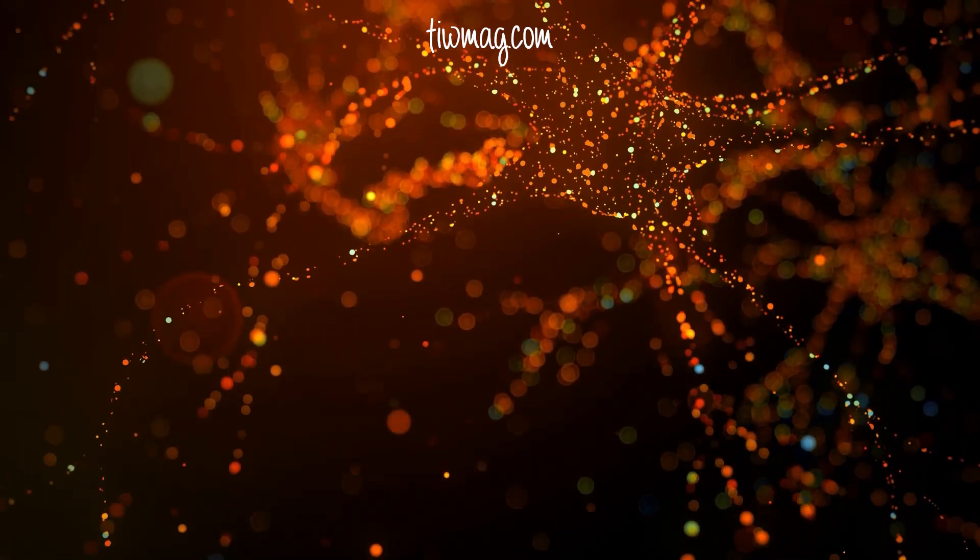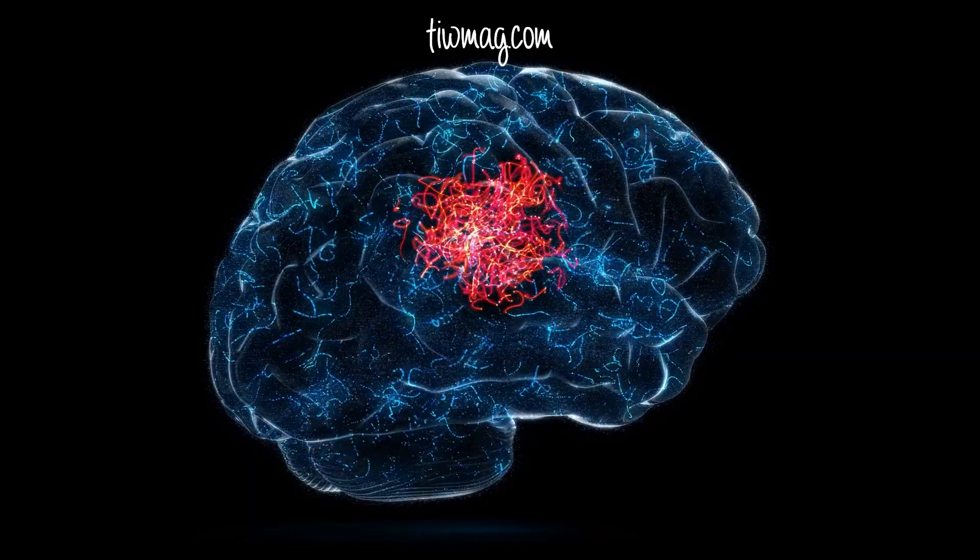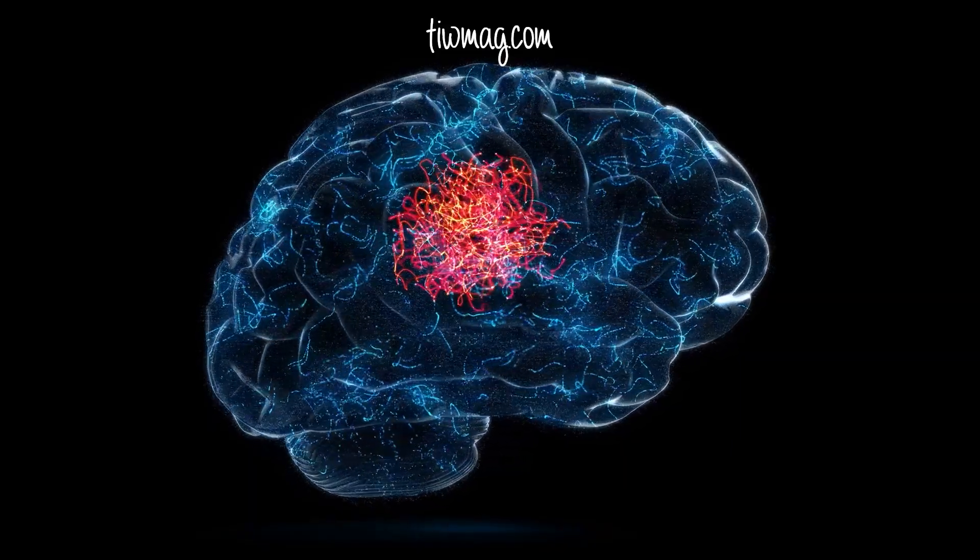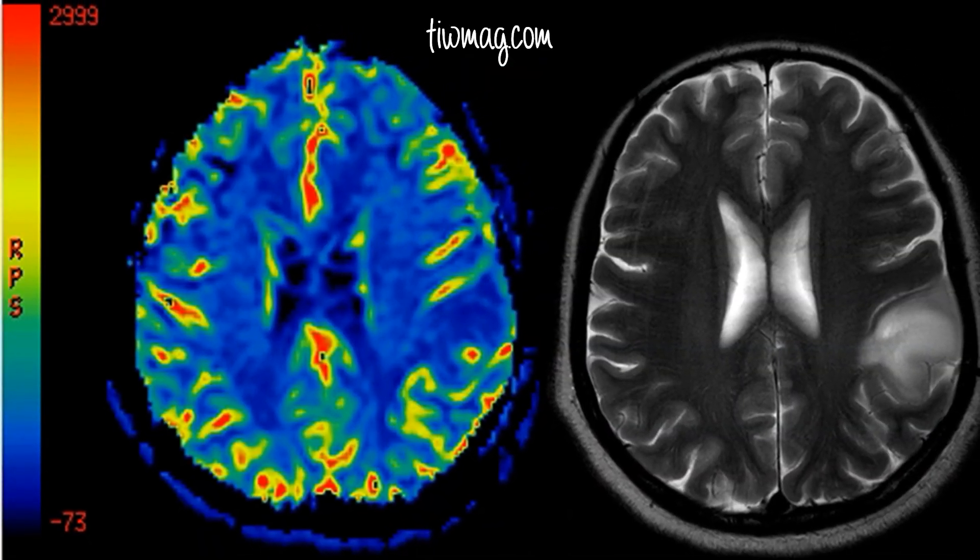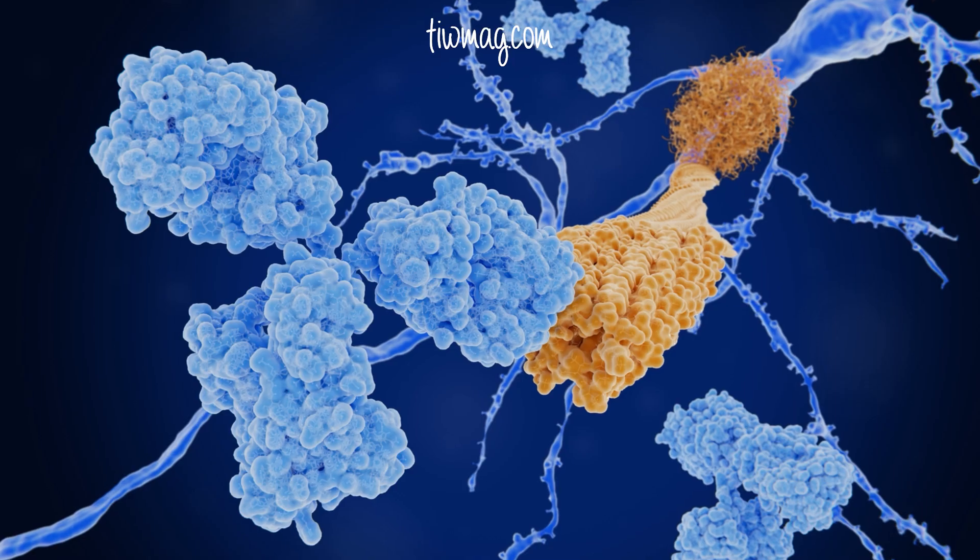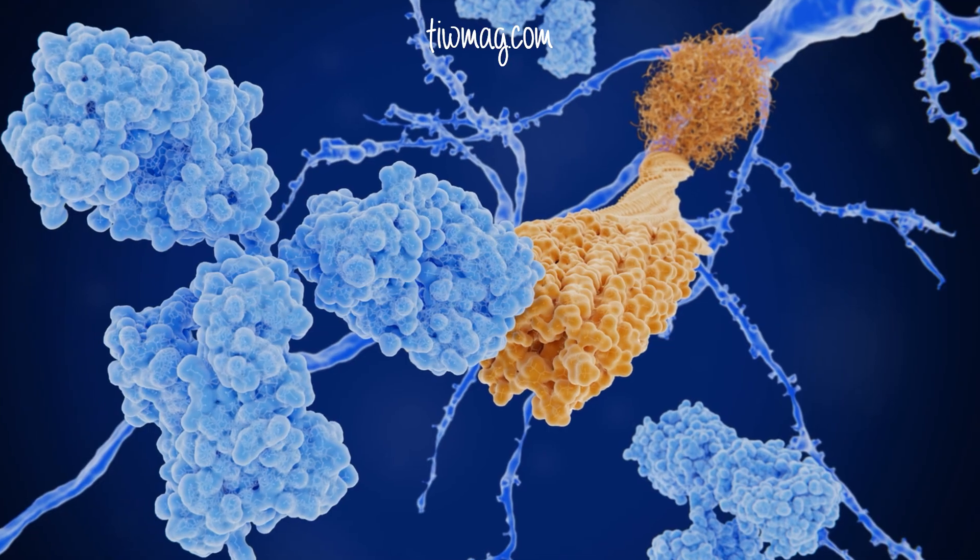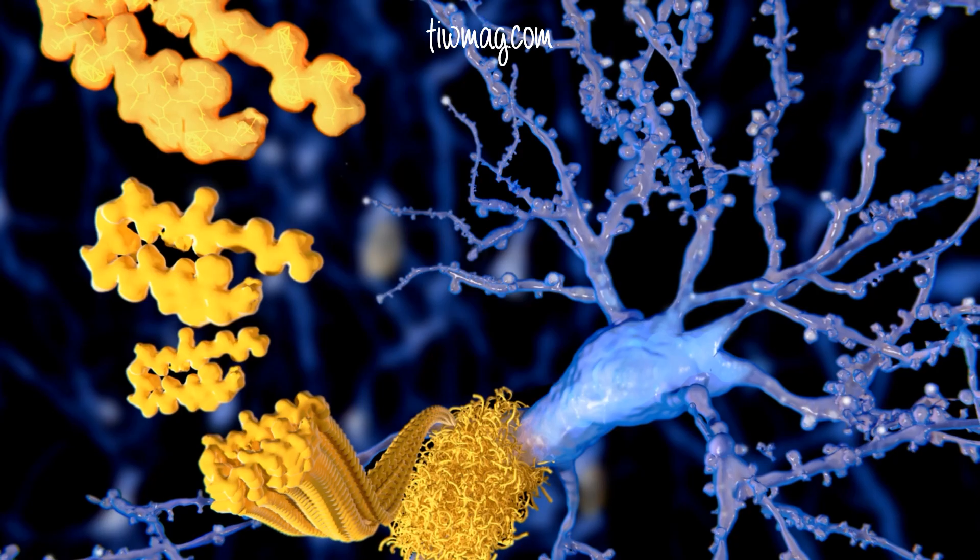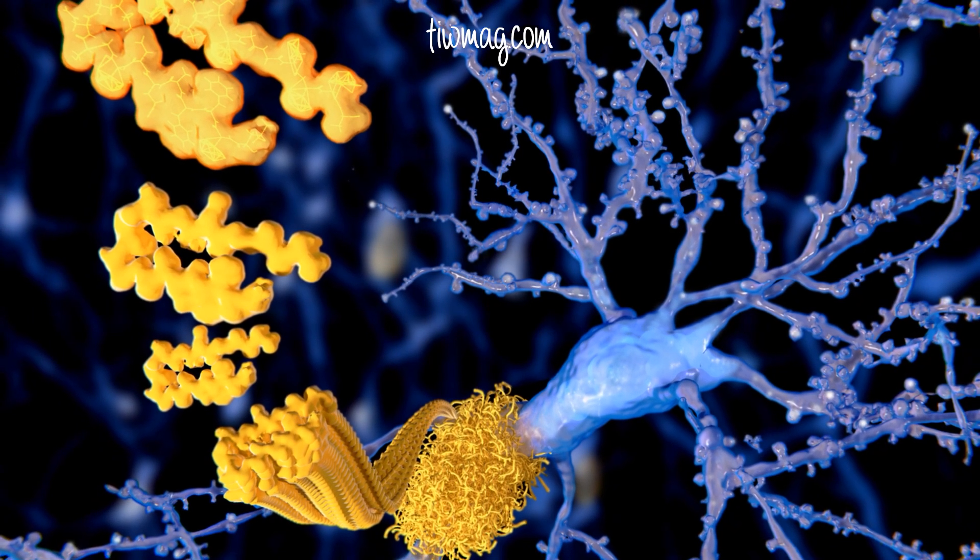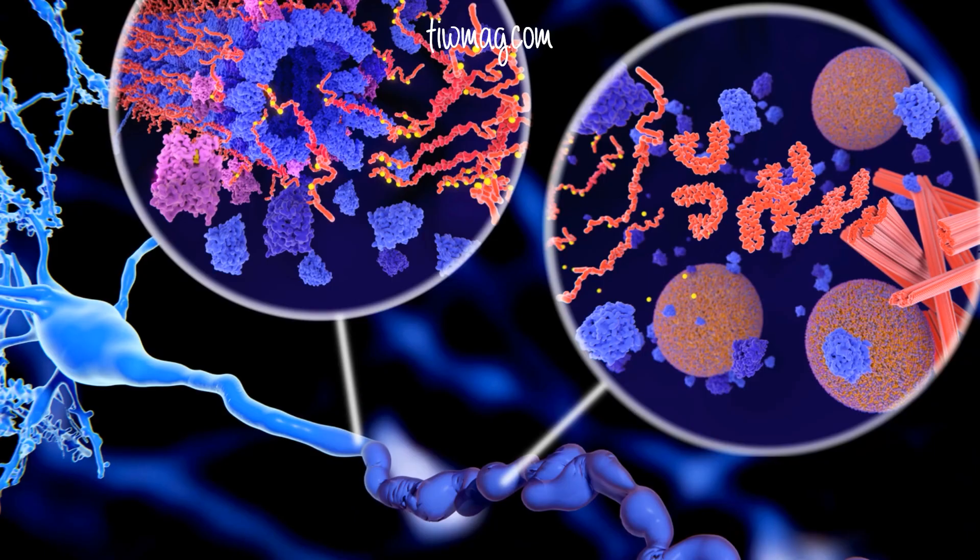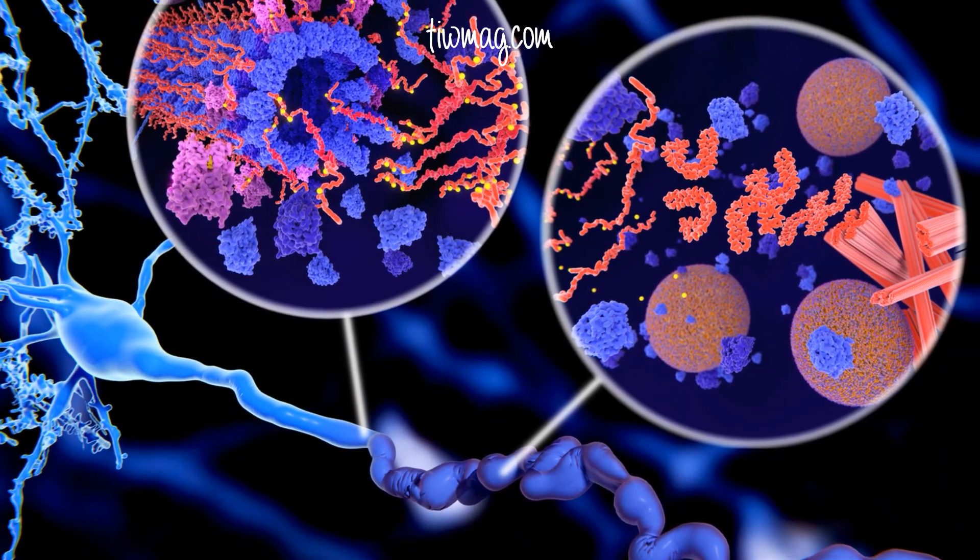Studies have shown that individuals with active HSV-1 infections have higher levels of inflammatory markers in their brains. Chronic inflammation is a known risk factor for neurodegenerative diseases, as it can damage brain cells and disrupt normal neural function. Interestingly, recent research has suggested that amyloid beta may have an antiviral function. Experiments have demonstrated that amyloid beta can trap and neutralize HSV-1, suggesting that its production may be a defense mechanism against this viral infection.